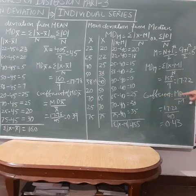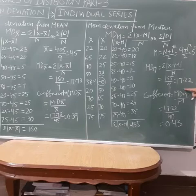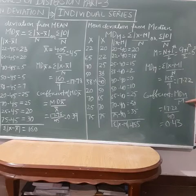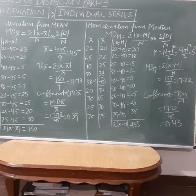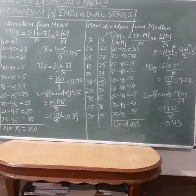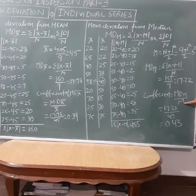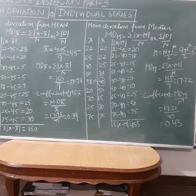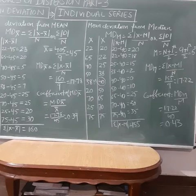To find the coefficient: the coefficient of mean deviation from median equals mean deviation from median divided by the median. Since we found mean deviation from mean earlier, we divided by the mean. Here, since we found mean deviation from median, we divide by the median.